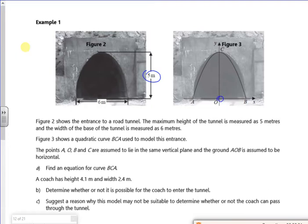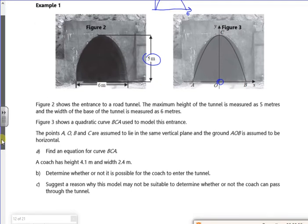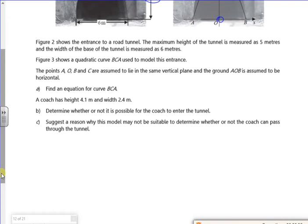referenced the center of the tunnel as where my origin is. What I might have done, if I'd wanted to, is reference the left-hand edge and have that going over to 6, and then that must have been 3 comma 5, and I could have made an equation that fitted it that way. But this one, we've set the y-axis as the center. So it says figure 2 shows the entrance to a road tunnel, so a quadratic curve